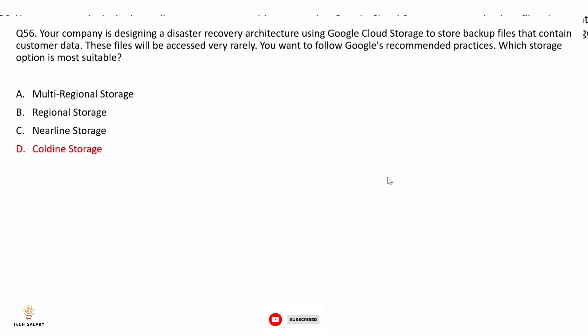Option A: multi-regional storage — backup files for disaster recovery generally do not need multi-regional storage. Option B: regional storage — no specific storage class is mentioned here. Option C: nearline storage — nearline is used if the frequency of accessing data is once or twice a month, but here backup files are rarely accessed and are only for disaster recovery. Option D: coldline storage — this is the most efficient storage class for backup files accessed very rarely. Regional and multi-regional are availability types, not storage classes. Coldline is the correct answer.